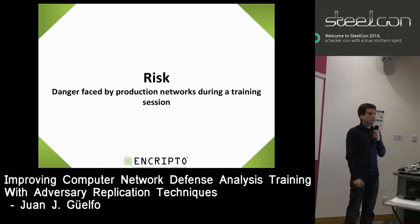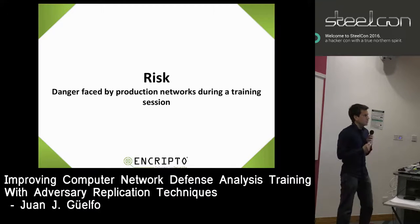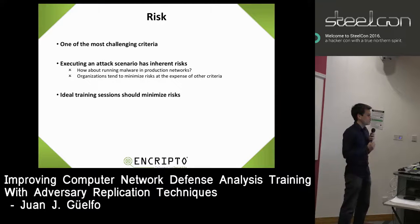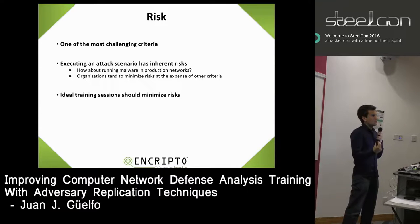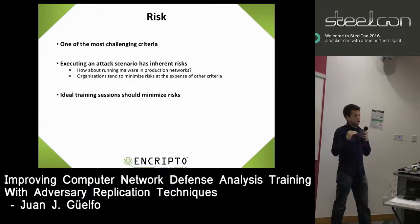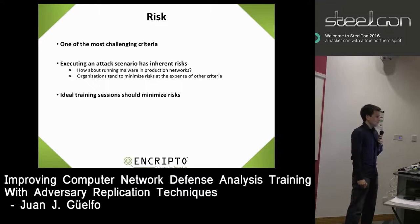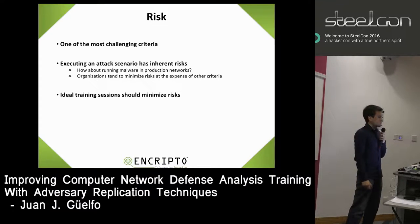The third challenge is risk — the danger faced by production networks during a training session. We are talking about what happens when you are conducting the training session in your production network and suddenly run a piece of malware. This brings the dilemma of realism versus risk: do we have realistic sessions or safe sessions? Organizations tend to minimize risks, which means they go for less realistic sessions and favor less risk.